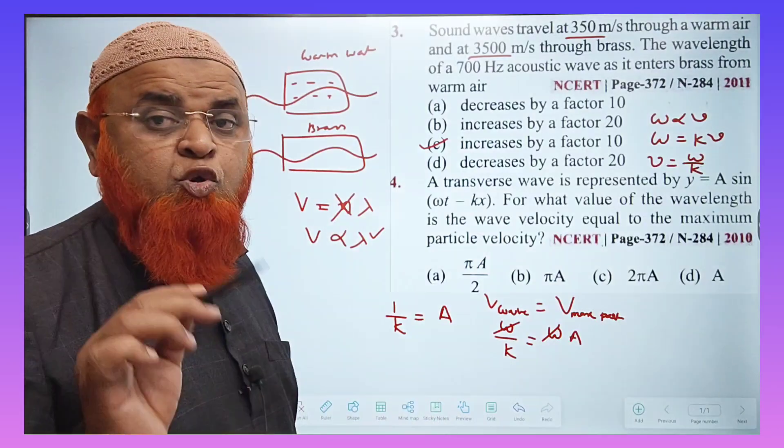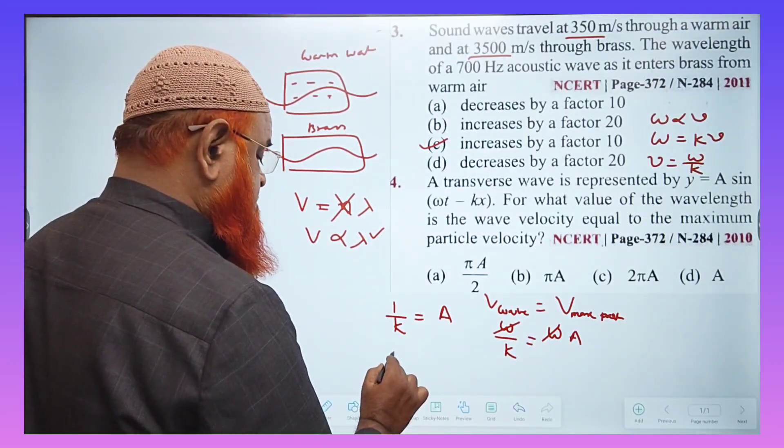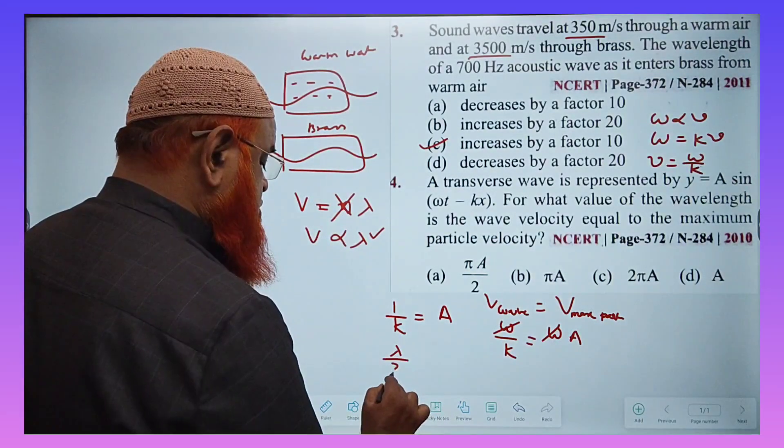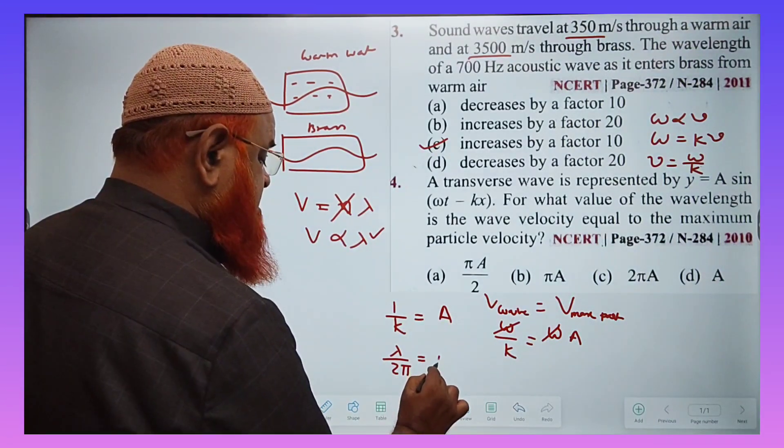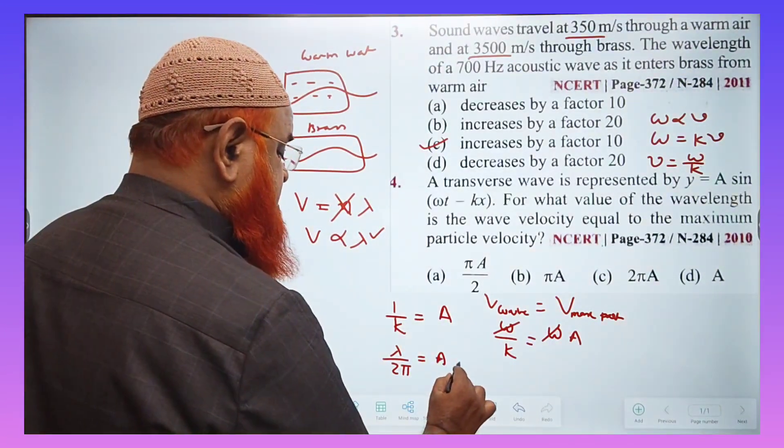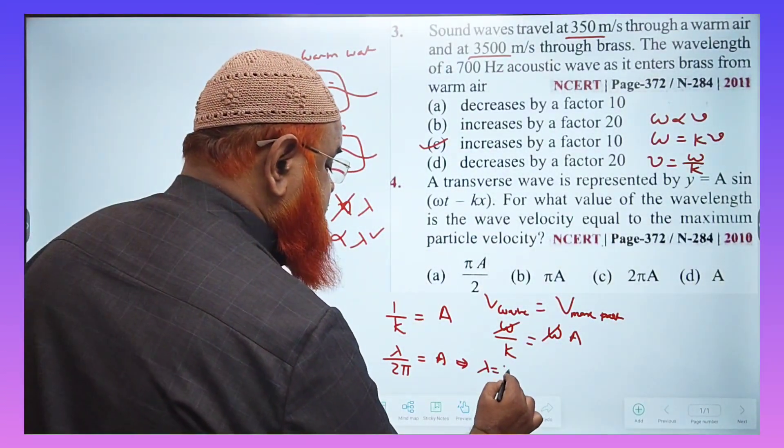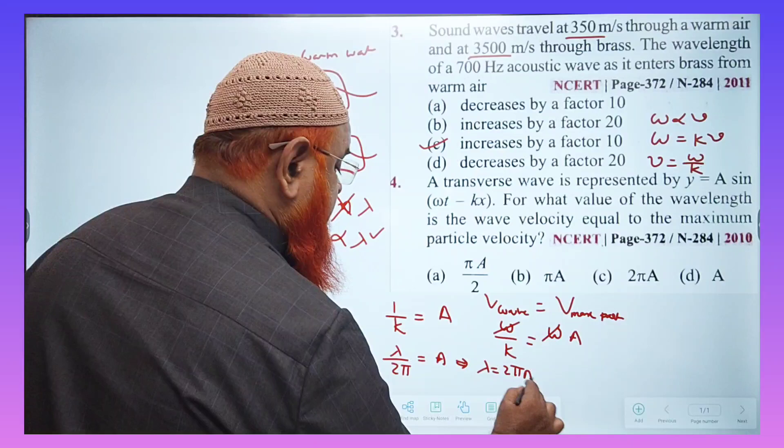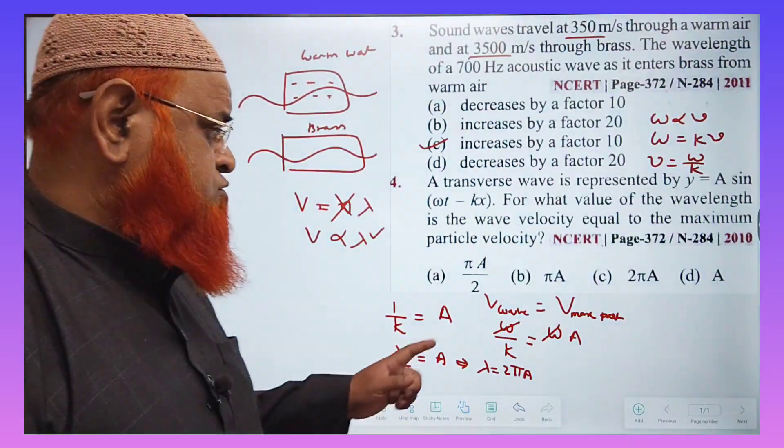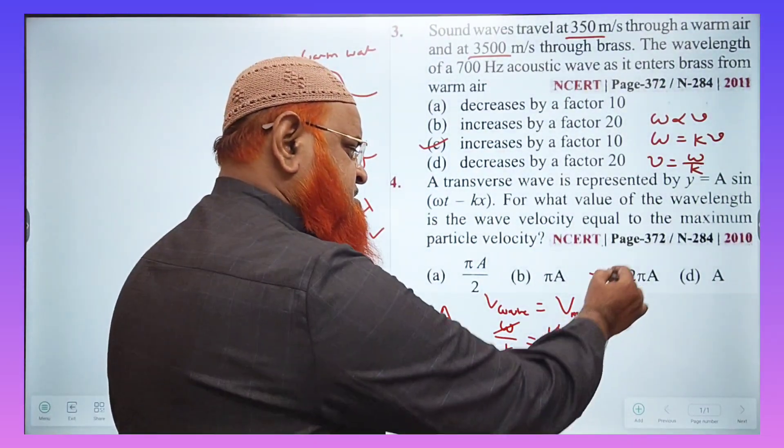And you know k is nothing but 2 pi by lambda. You just substitute here now. 2 pi by lambda, which is nothing but A. So from this, it is understood that your answer is going to be lambda is nothing but 2 pi into A. So your option is C.